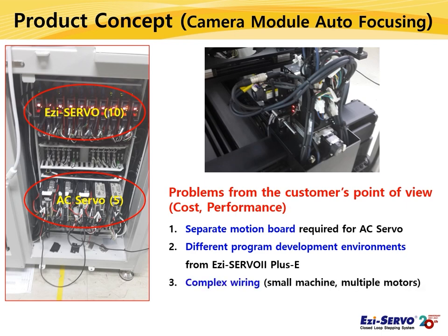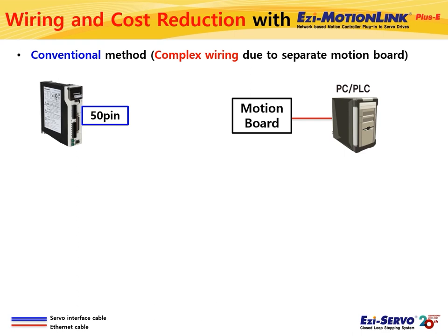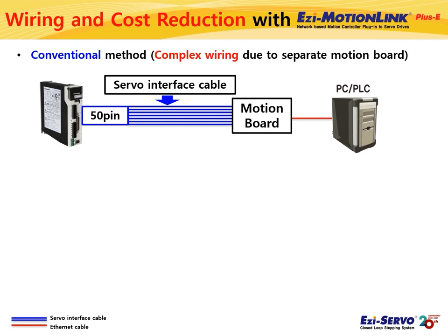Long and thick bundles of wires connected from the AC servo to the motion board are required, making wiring complicated. This inconvenience can be solved by using our product, Easy Motion Link Plus E. Easy Motion Link Plus E is an Ethernet type 1-axis motion controller that can be used by plugging it into the interface connector of the AC servo drive.